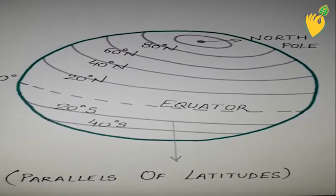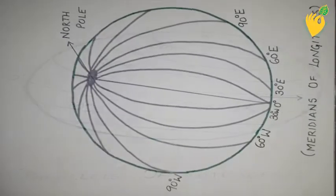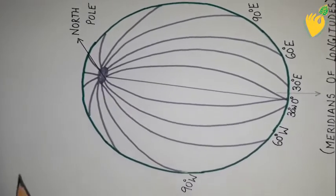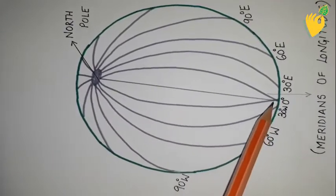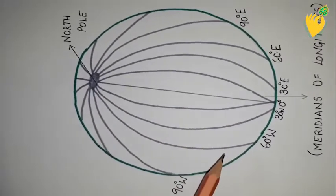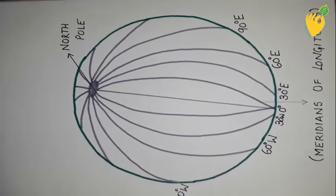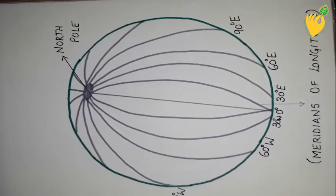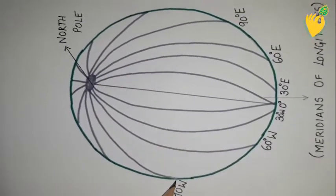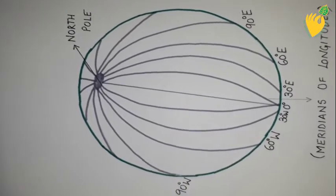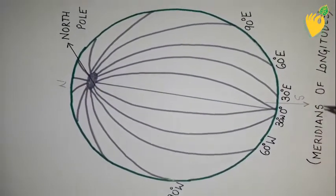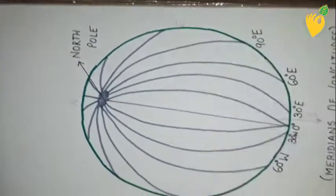Next we move to the important parallels of latitude and their uses. Our next diagram is the meridians of longitude. The lines run from the north pole all the way to the south pole, in all directions of the earth. The meridians of longitude are imaginary lines that divide the earth into eastern and western directions.